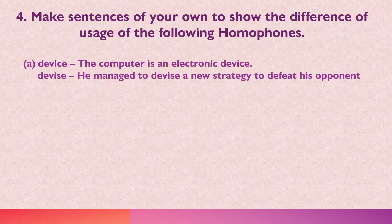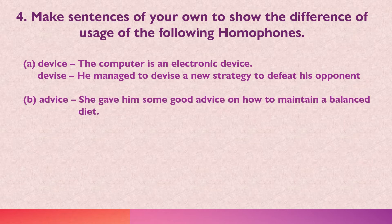He managed to devise a new strategy to defeat his opponent. Now 'device' is a noun. Changing this to 'devise,' he managed to devise — meaning he managed to make up. So device changes into a verb just by changing the C into an S. Similarly, 'advice' — she gave him some good advice on how to maintain a balanced diet. Advice is a noun.